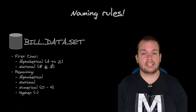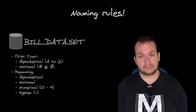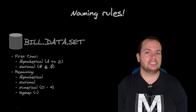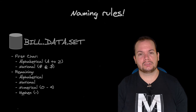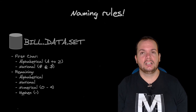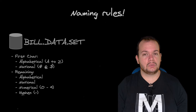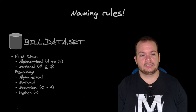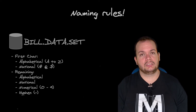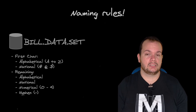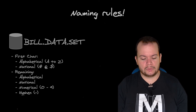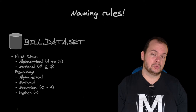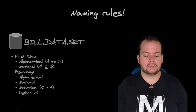So let's look into this sample: build.data.set. Here we have our dataset name. The first qualifier — the first segment — is what we call the high-level qualifier. So 'build' here is our high-level qualifier. And the last one is the low-level qualifier. The first character needs to be alphabetical or national, and then from position two to eight, we can also have numeric characters. These are the rules we need to follow when naming them.